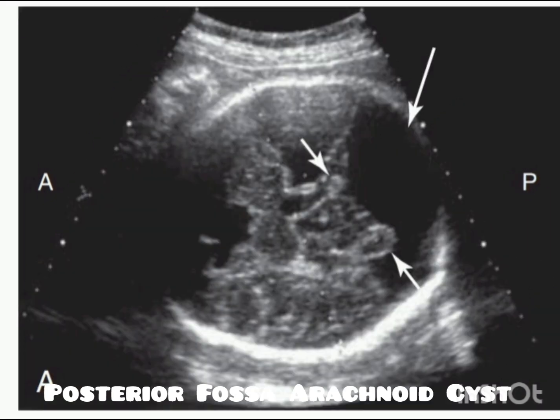In this image, you can see another example of a posterior fossa arachnoid cyst. There is a large fluid collection in the posterior fossa indicated by the long arrow, which is displacing and compressing the cerebellum indicated by the short arrow. There is no cerebellar splaying and the cerebellar vermis is intact.